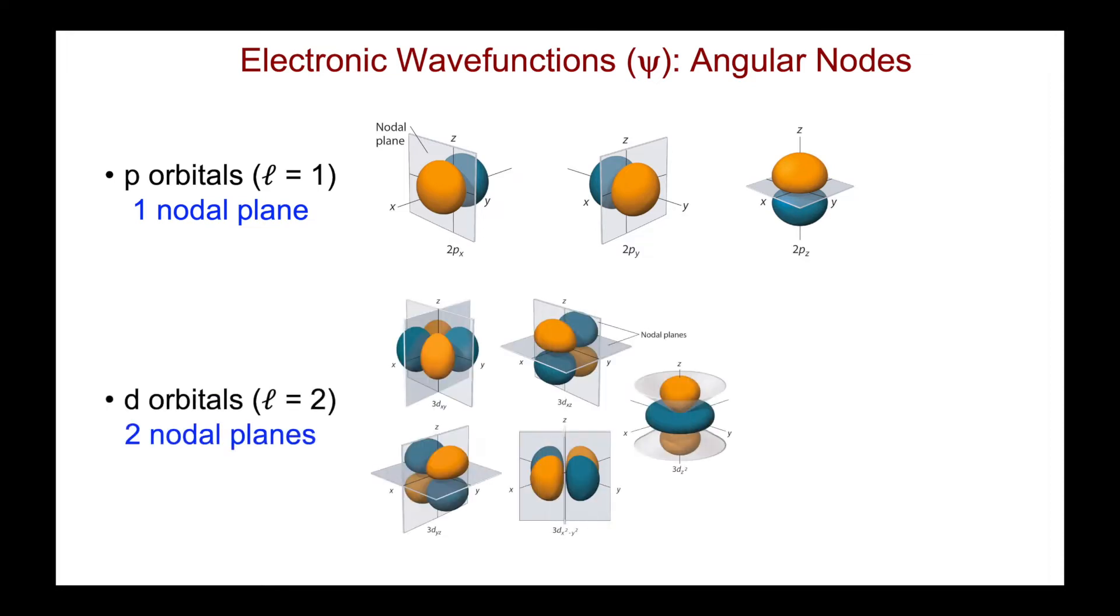For d orbitals, l equals 2, there are two nodal planes. And while we won't get into these in detail, you should have seen these in freshman chemistry before, just shown here for the five different d orbitals. Here are the two nodal planes. Again, across each one, there is a change in the sign of the wave function.